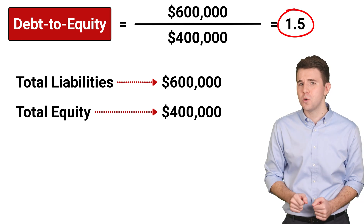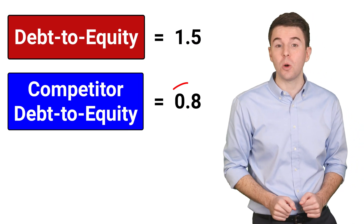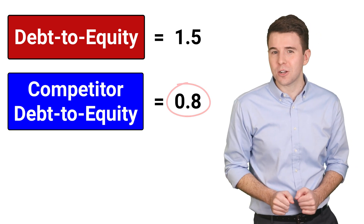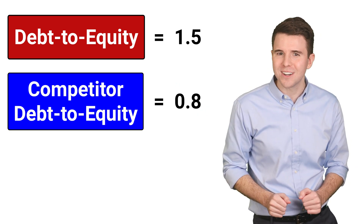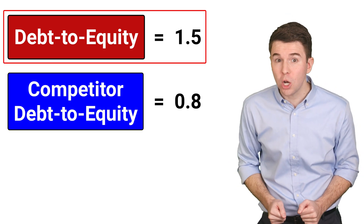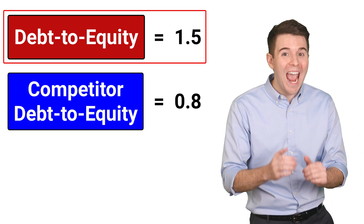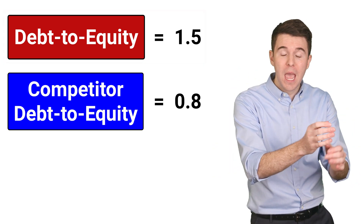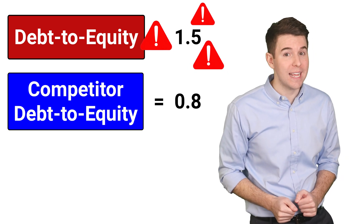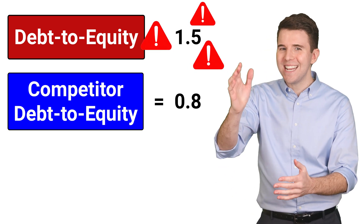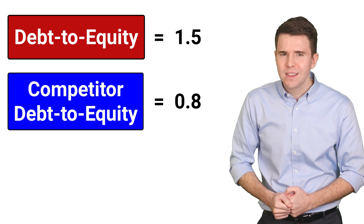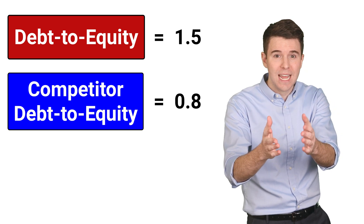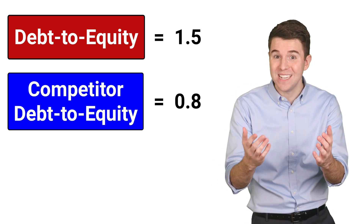Now, let's compare this to a competitor that has a Debt-to-Equity Ratio of 0.8. Which company is riskier in terms of their financing structure? Well, our hypothetical company with a ratio of 1.5 has more debt relative to its equity than the competitor, making it a riskier financing structure. But while higher debt is a sign of higher risk, the company could also be smart if it earns higher returns using this debt financing than the interest rate it pays on the debt.